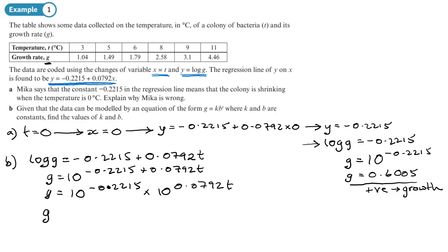We can work these out now. 10 to the power of negative 0.2215, which we've worked out already, is 0.6005 times by—we can now work out 10 to the power of 0.0792, and we get 1.2, so 1.2 to the power t.